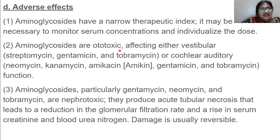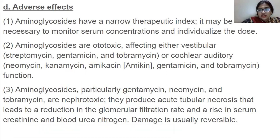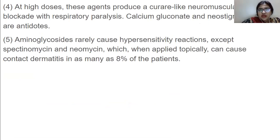Aminoglycosides are ototoxic, affecting either vestibular or cochlear auditory functions. Particularly gentamicin, neomycin, and tobramycin are nephrotoxic — they produce acute tubular necrosis leading to a reduction in glomerular filtration rate and a rise in serum creatinine and blood urea nitrogen. Damage is usually reversible. At high doses, these agents produce a curare-like neuromuscular blockage with respiratory paralysis; calcium gluconate and neostigmine are the antidotes. Aminoglycosides rarely cause hypersensitivity reactions, except spectinomycin and neomycin, which when applied topically can cause contact dermatitis in as many as 8% of patients.